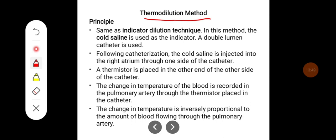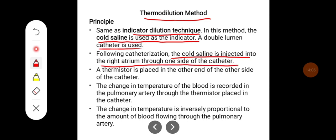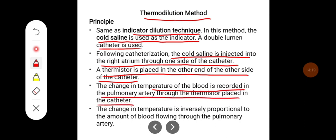The thermodilution method uses the same principle as the indicator dilution technique, but cold saline is used as the indicator. A double-lumen catheter is used. After catheterization, cold saline is injected into the right atrium through one side of the catheter, and a thermistor is placed at the other end. The change in temperature of the blood is recorded in the pulmonary artery through the thermistor. The change in temperature is inversely proportional to the amount of blood flowing through the pulmonary artery.